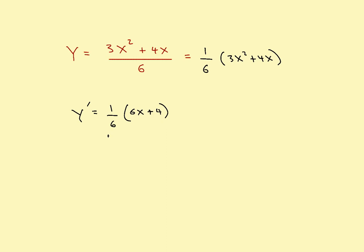So there is the derivative. Just because you've got something divided by something, you don't necessarily have to use the quotient rule. If the denominator is a constant, you can just move it to the side and go back to the power rule.